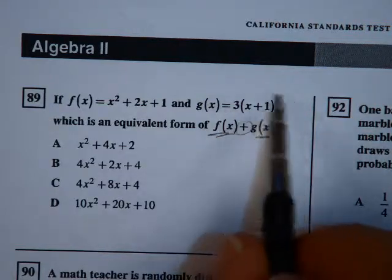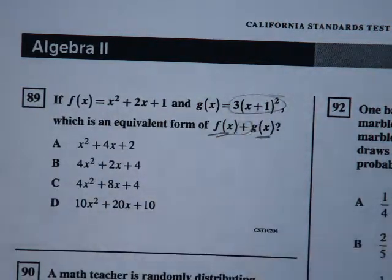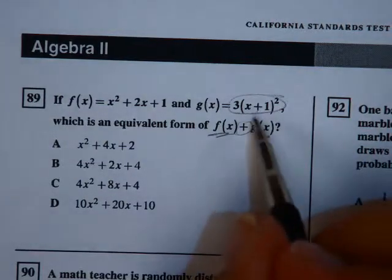Now we can't necessarily do that when it's in this form because we don't have like terms at least compatible with each other. So we have to go ahead and foil this.